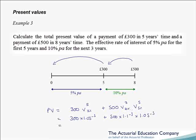Putting that into our calculator, we get 235 pounds and 6 pence for the first term, and 294 pounds 34 pence for the second term, giving a total present value of 529 pounds 40.